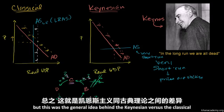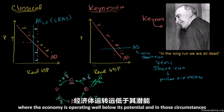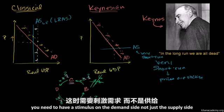But this was the general idea behind Keynesian versus classical economics. Keynes says, look, there are circumstances like the Great Depression where the economy is operating well below its potential, and in those circumstances, you need stimulus on the demand side, not just the supply side.